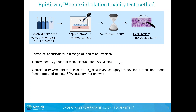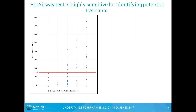The data I'm showing today covers 59 chemicals tested with a range of different inhalation toxicities. Based on the four-point dose curve for each chemical, we determined an IC75 value — the dose at which tissues are 75% viable — and then correlated the IC75 values with rat in vivo LC50 data and the GHS category to develop a prediction model. We also compared against the EPA classification scheme, which can be found in our paper.